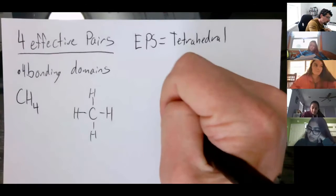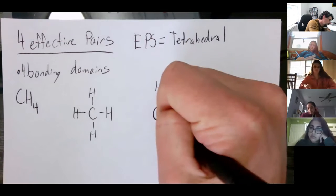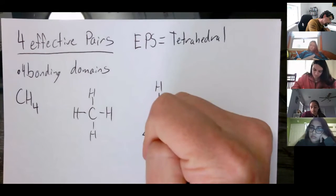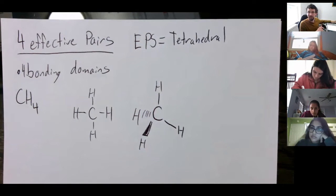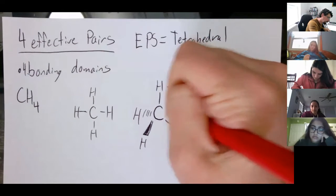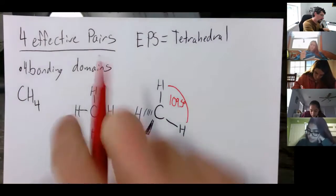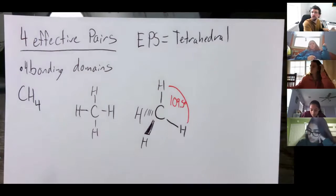How would you draw the 3D representation of this molecule? How many atoms are going to be in the plane of the board? Two — so the hydrogen up here and this hydrogen. How many are going to be coming out towards us? One. And the approximate bond angle? 109.5. That's important to know — it's not 90. If we look at this structure it looks like it's 90, but it's not, because we have three dimensions to spread this out.